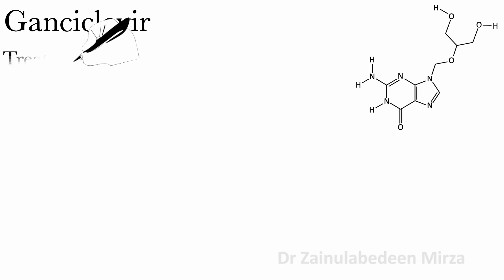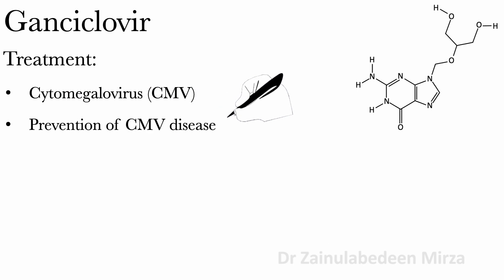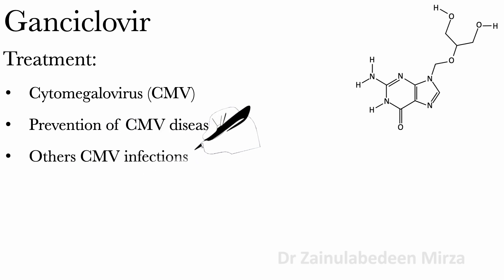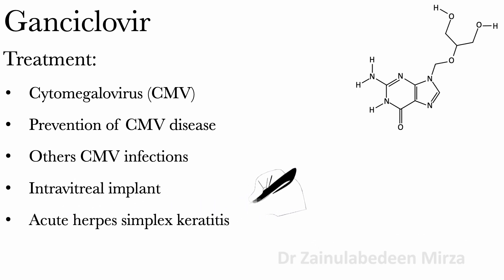GAN Cyclophere is used to treat Cytomegalovirus, CMV. Prevention of CMV in transplant patients. Other CMV infections. Intravitreal implant. Acute herpes simplex keratitis.